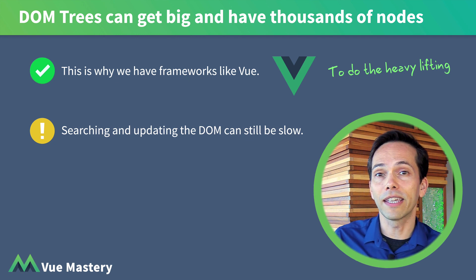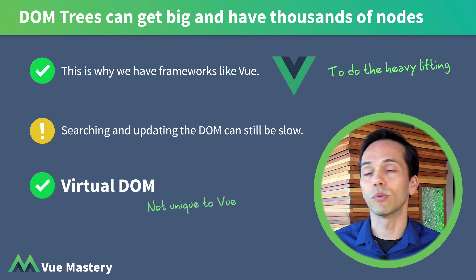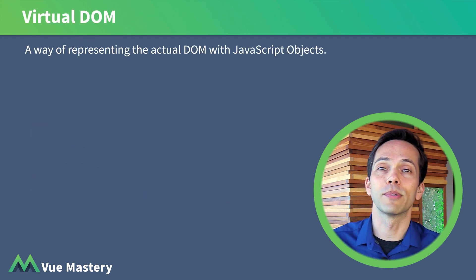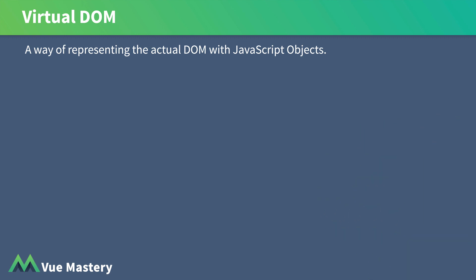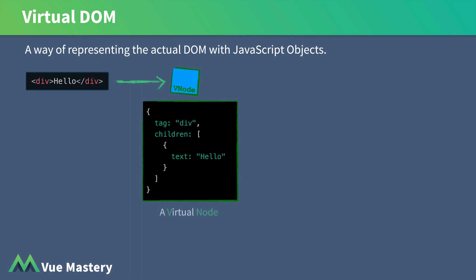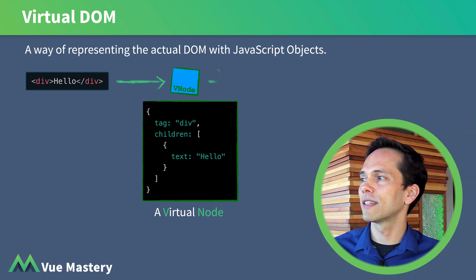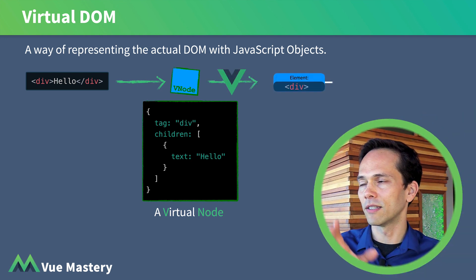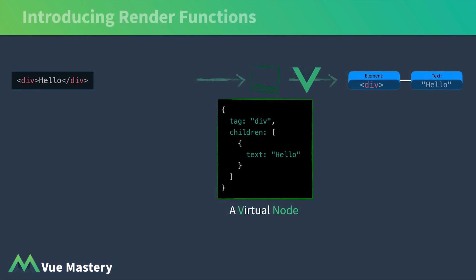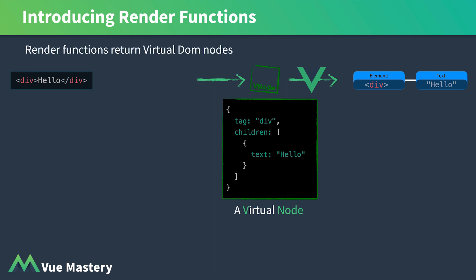This is why Vue and other frameworks like it have something called the virtual DOM. The virtual DOM is a way of representing the DOM using JavaScript objects. For example, this HTML can also be represented by a virtual node, which looks like this. As you can see, it's simply a JavaScript object. Vue knows how to take this virtual node and mount it onto the DOM, which updates what we see in our browser. There's actually another step in here, where Vue creates a render function based on our template, which returns a virtual DOM node.